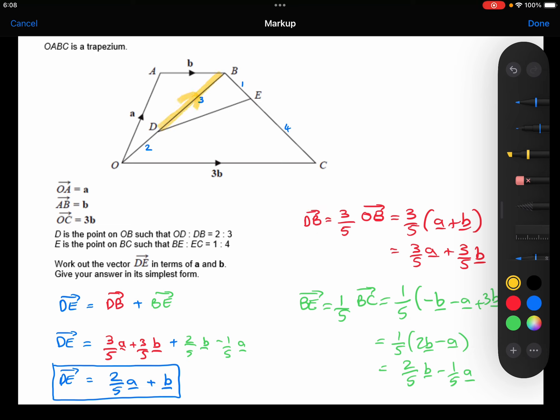D to B, I know that's going to be 3 fifths of the whole of OB. This part here is 2 fifths, this is 3 fifths. The whole of OB is going to be the same thing as OA plus AB, so that's a plus b.